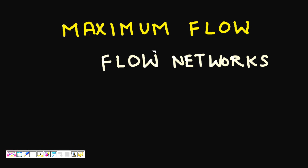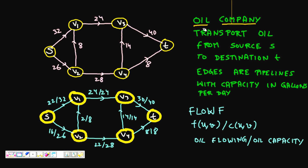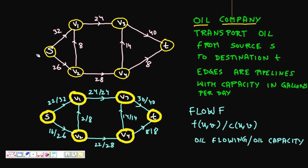In this lecture we are going to learn about maximum flow and flow networks. Let's take a very common example: you are the owner of an oil company. You have a source and a destination city, and you have to send your oil through pipelines to the destination city. There is a network of pipelines and they all have some capacity — they can carry a certain number of gallons per day.